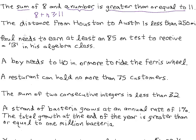The distance from Houston, Texas to Austin, Texas is less than 250 miles. In this example we're dealing with distance, so we let d equal distance. The distance from Houston to Austin is less than 250 miles, so d < 250. We're using what we know about the distance between two points — the distance is going to be less than a certain amount, in this case 250.